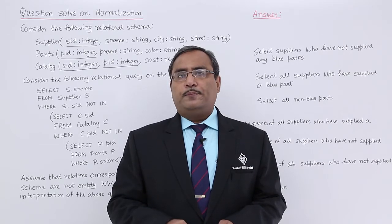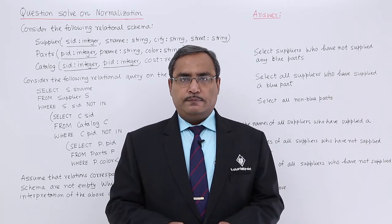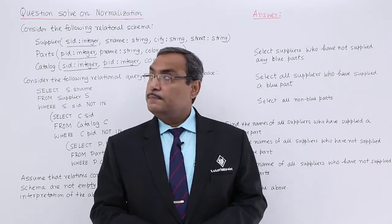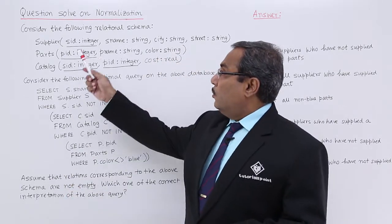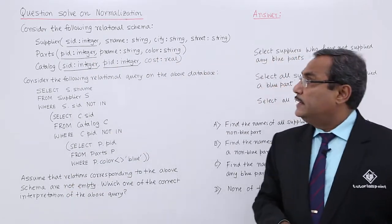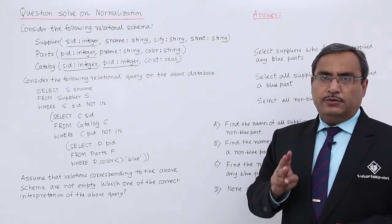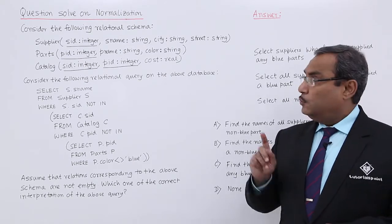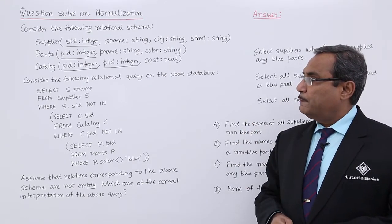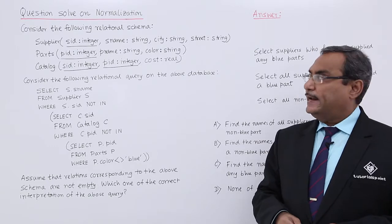We are going to solve another problem on normalization. Here is the problem for us. Consider the following relational schema. We are having three schemas: one is the Supplier, next one is the Parts, and the last one is the Catalog.